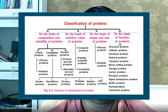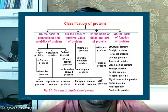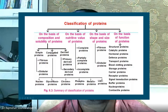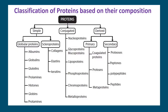Based on shape and size, proteins are either fibrous or globular — spherical-shaped ones are called globular proteins. Based on function, proteins can be classified as structural, catalytic, hormonal, defense, transport, blood clotting, storage, carrier, receptor, signal transcription, buffer, nucleoproteins, or contractile proteins. Each type has its own unique structure and molecular weight.